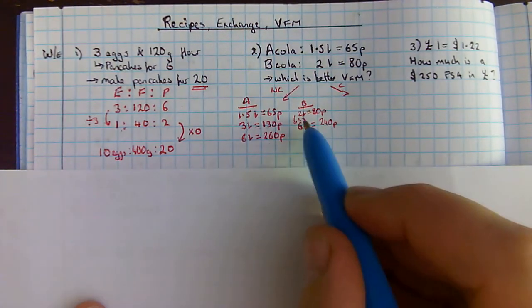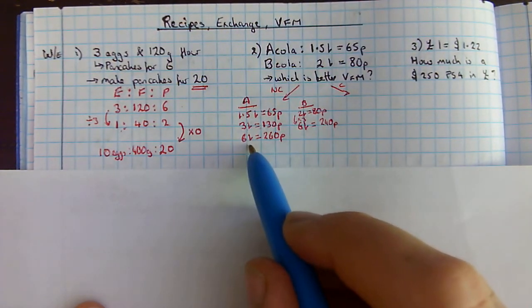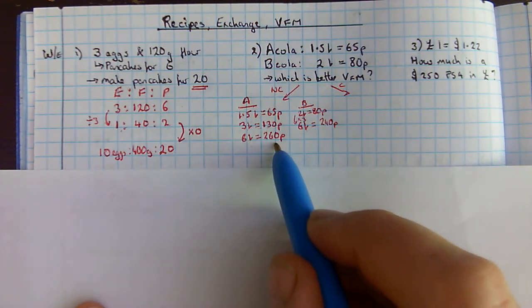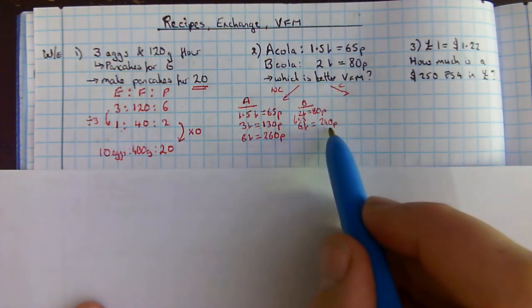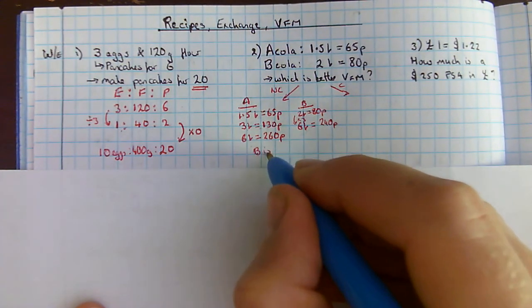So, by multiplying and having a common quantity, I can now say 6 litres of A would cost me £2.60. 6 litres of B would cost me £2.40. So B is better value.